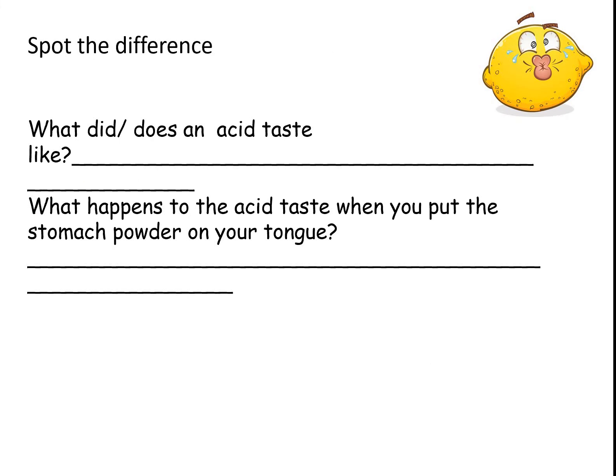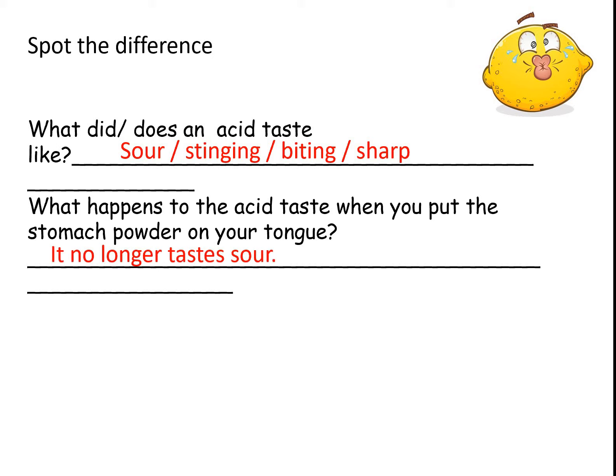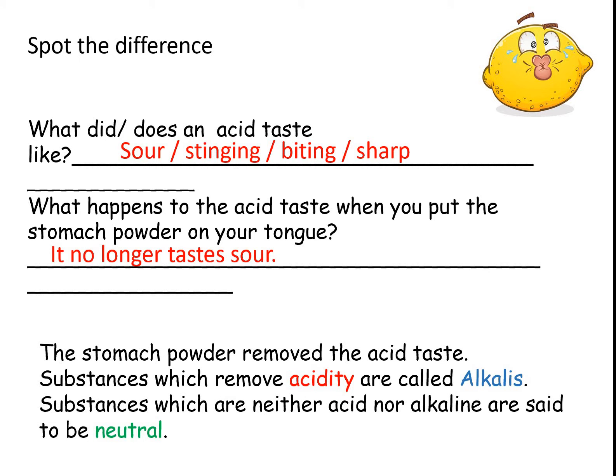You have this section in your booklets. Hopefully, if you've been able to do this or from memory, you'll find that an acid tastes sour — potentially stinging, biting, or sharp. These are all words used to describe the taste of an acid. When you put something like stomach powder or baking powder on your tongue, you should find it no longer tastes sour when you add the lemon juice or other acid. It may also taste salty — you'll find out why later. The stomach powder or baking powder removed the acid taste, and substances which remove acidity are called alkalis.